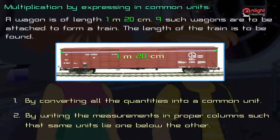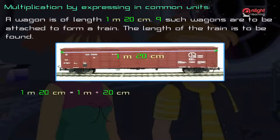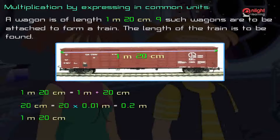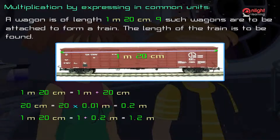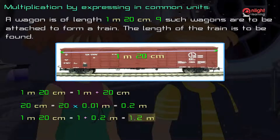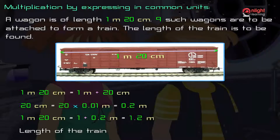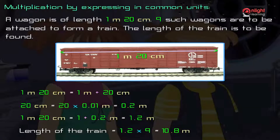Let us first employ the method of expressing in common units to solve this problem. In this method, all the quantities are expressed in a single unit. Let us express them in meters. Hence, expressing the length of the wagon: 1 meter 20 centimeters is equal to 1.2 meters. Since all the quantities are in a common unit, we can multiply. The length of the train is equal to 1.2 × 9 = 10.8 meters.